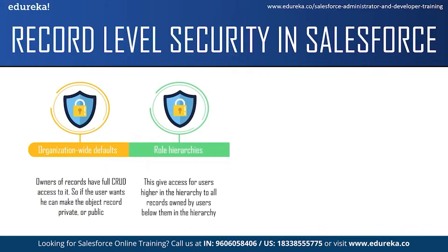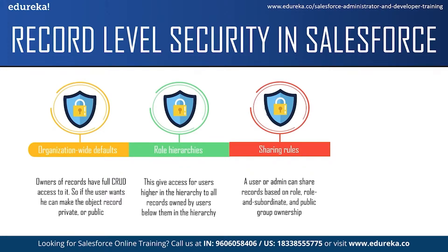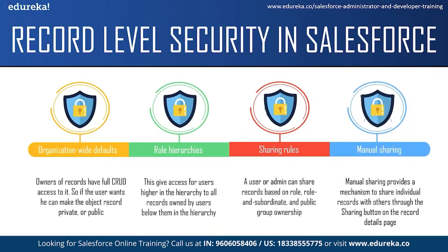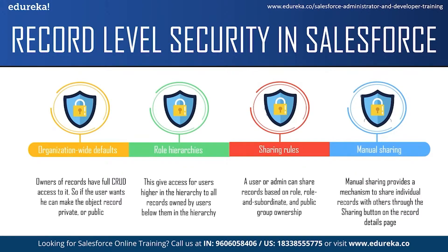The next way is role hierarchy. This gives users higher in the hierarchy access to all records owned by users below them. For example, a sales representative can only view their own records, but a manager can view all sales representatives' records. Role hierarchy does not have to match your organization chart exactly — each role should represent a level of data access a user or group needs. Records can also be shared with fellow employees using sharing rules. A user or admin can share records based on roles, subordinates and public group ownership. The fourth way is manual sharing, which provides a mechanism to share individual records with others through the Sharing button on the record detail page.